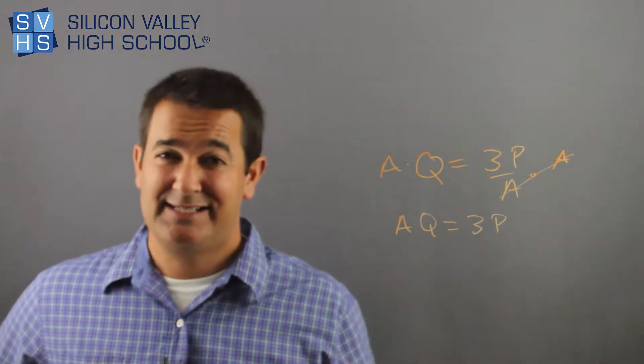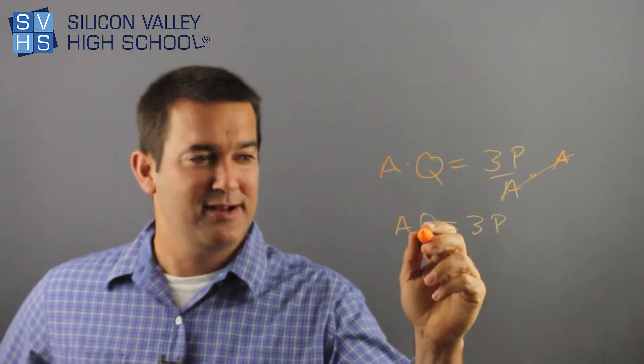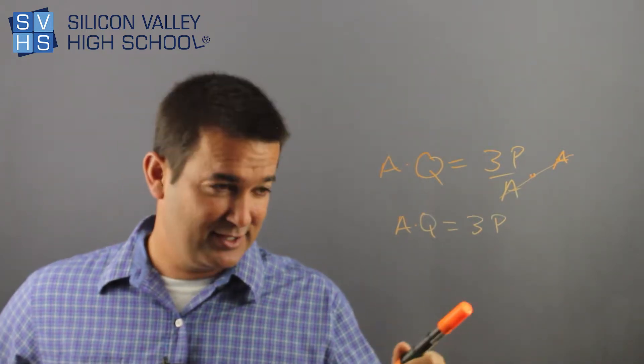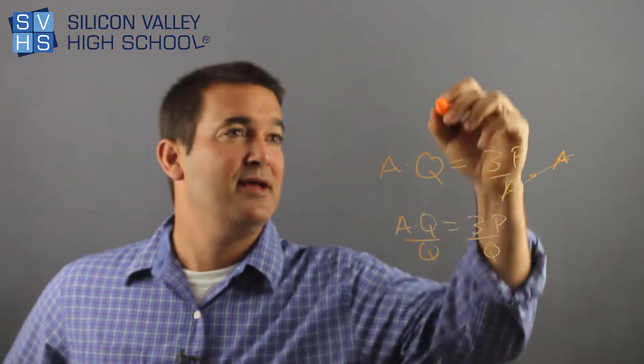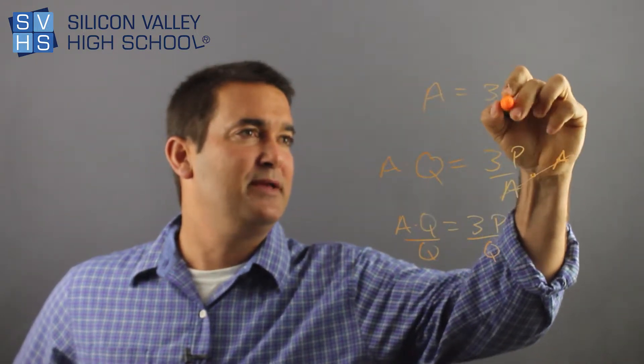So now, this is pretty easy. To get A alone, I have to get this Q out of here. They're definitely multiplied. Remember when two letters are next to each other, multiplied. Divide both of these suckers by Q, and you're done. A equals 3P over Q.